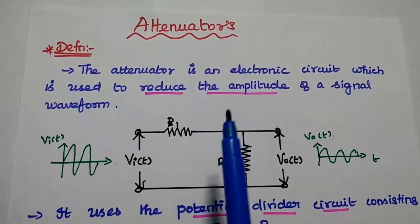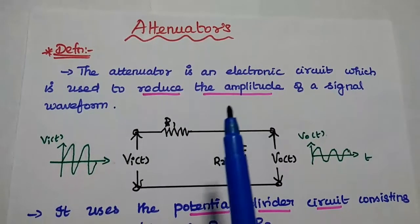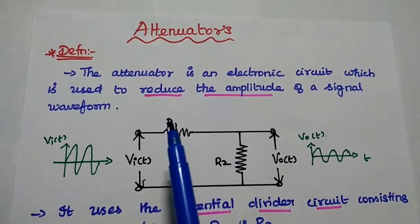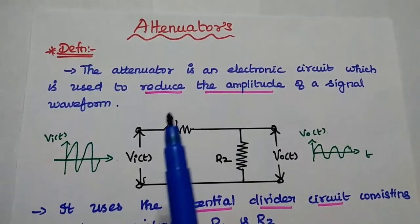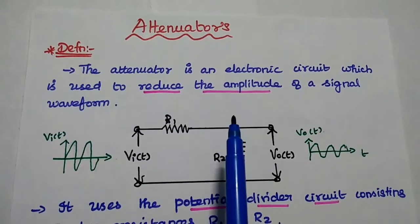Dear students, now we are going to discuss attenuator in electronic circuits. The attenuator is an electronic circuit which is used to reduce the amplitude of the signal.